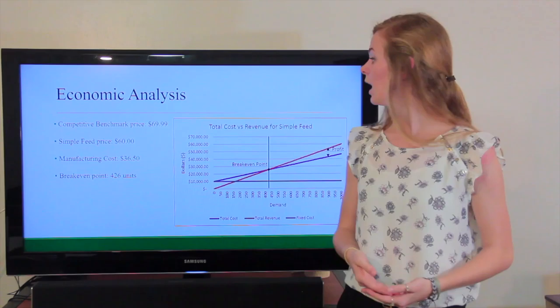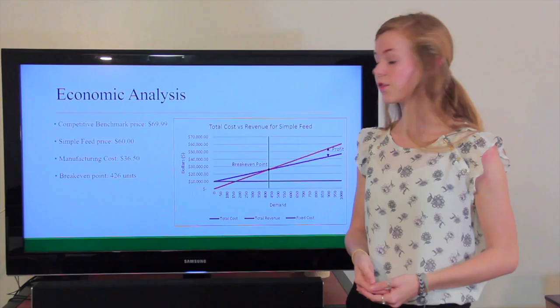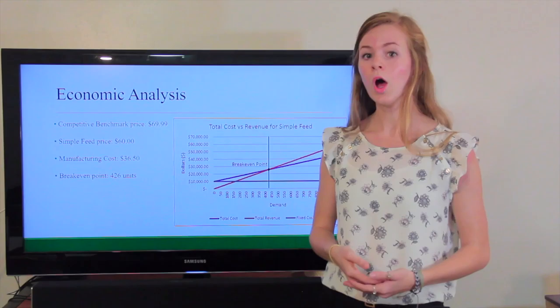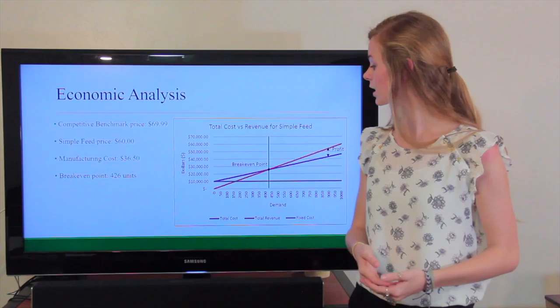Next, our team decided to do a competitive benchmark. We went out and found a product that was similar to ours. We found one for an automatic plant waterer that had really great reviews and was priced at $69.99, so we decided that we would price the Simple Feed product at $60. We estimate that the manufacturing cost for our product will be $36.50. That includes the Arduino microcontrollers and the rest of the parts to assemble our product.